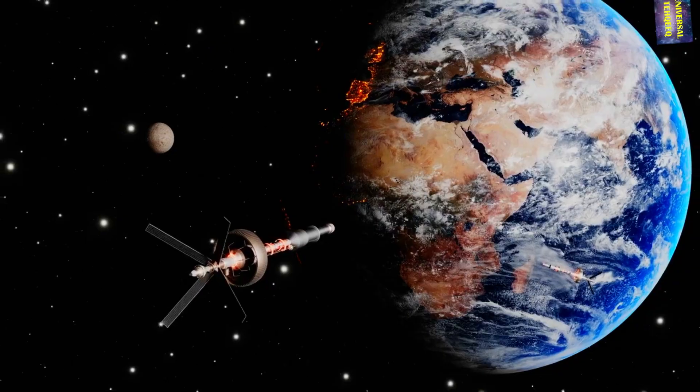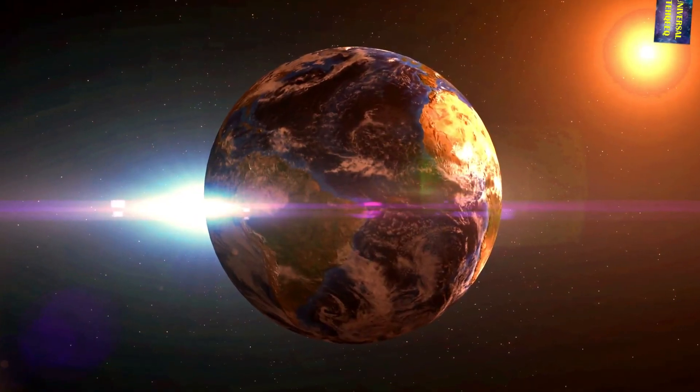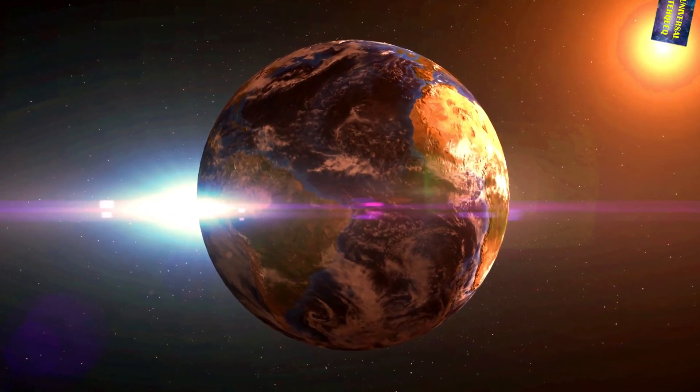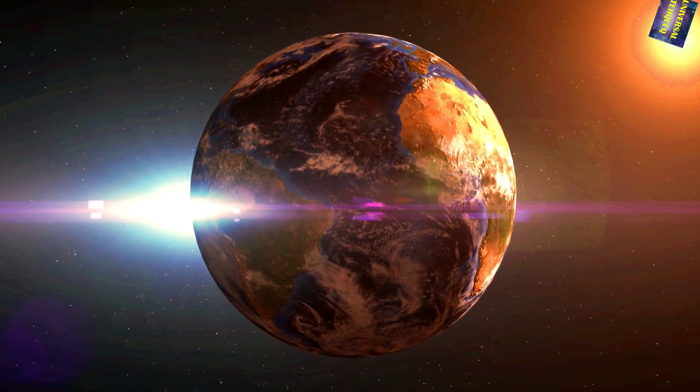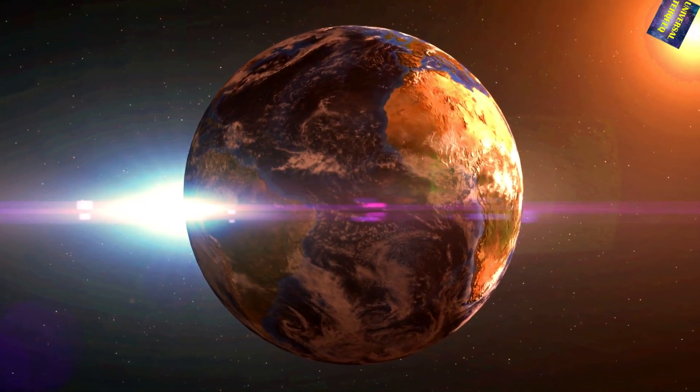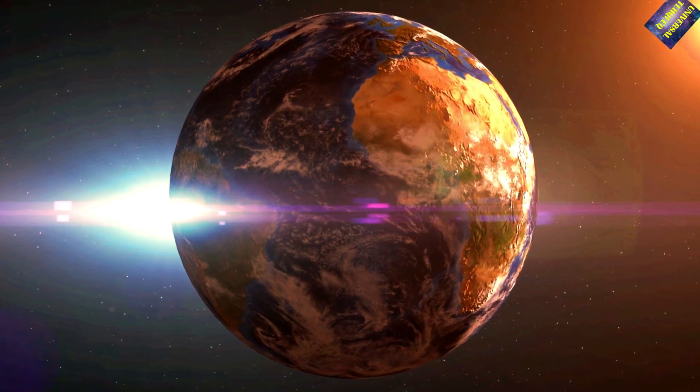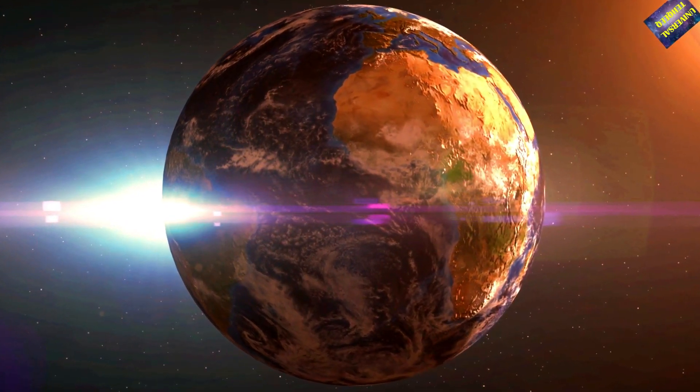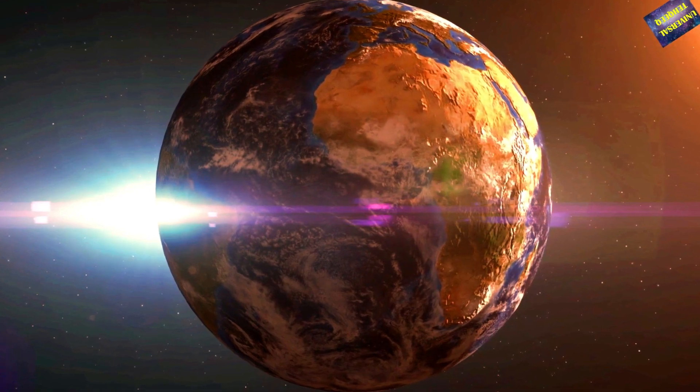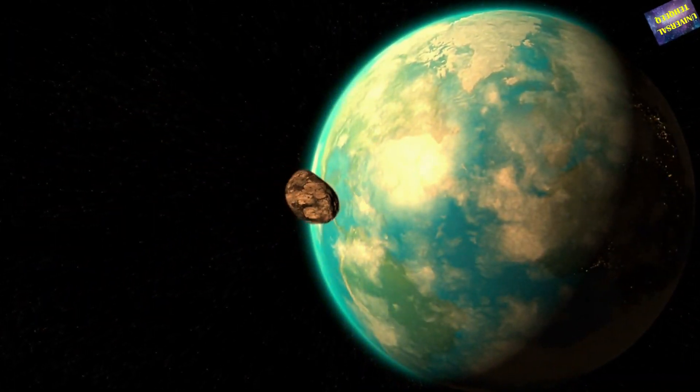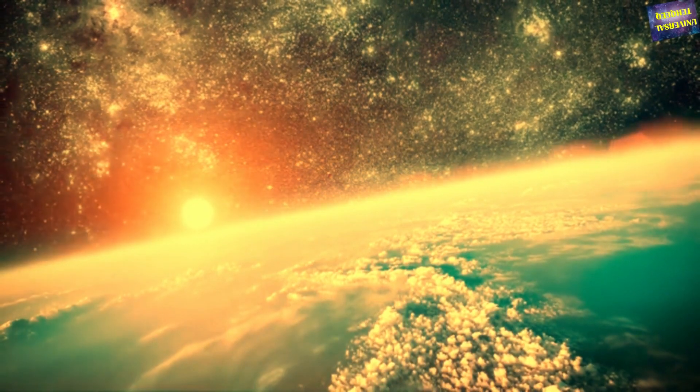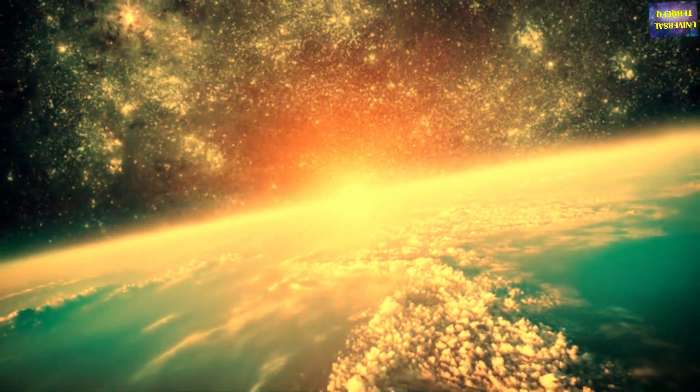To understand the possibility of life before Earth, it is essential to comprehend the conditions present during the early stages of our planet's formation. The Earth is estimated to be around 4.5 billion years old, and during its early years, it experienced a tumultuous environment. Frequent asteroid impacts, volcanic activity, and the lack of an atmosphere made it inhospitable for life to develop.